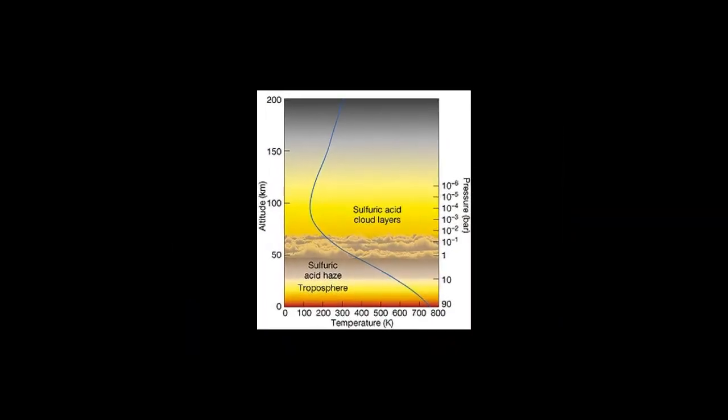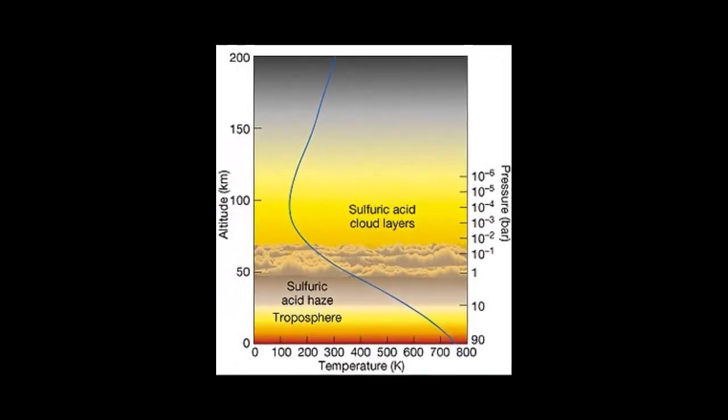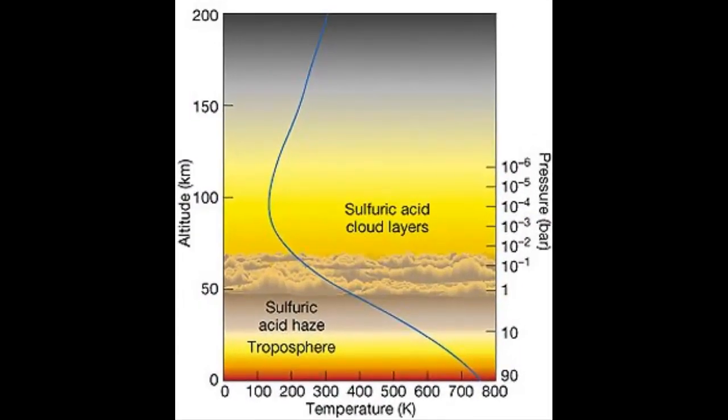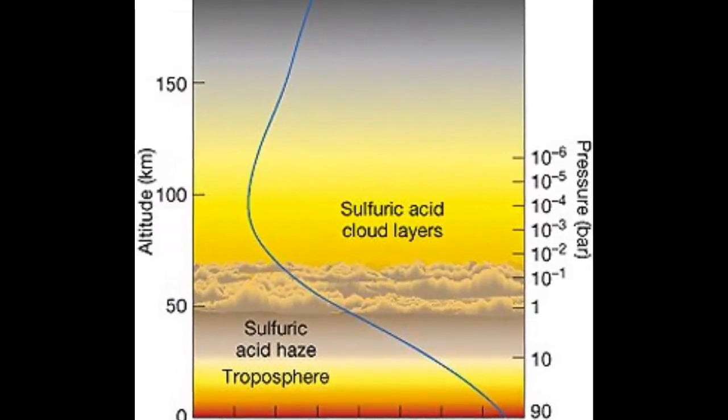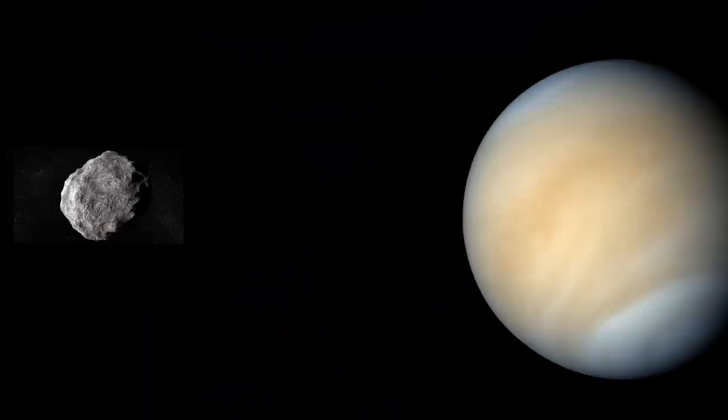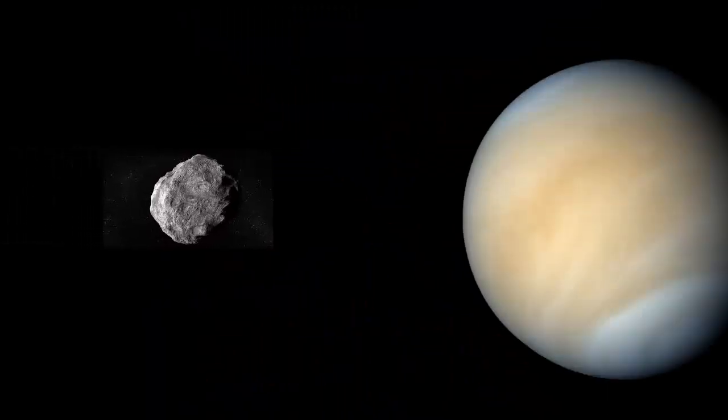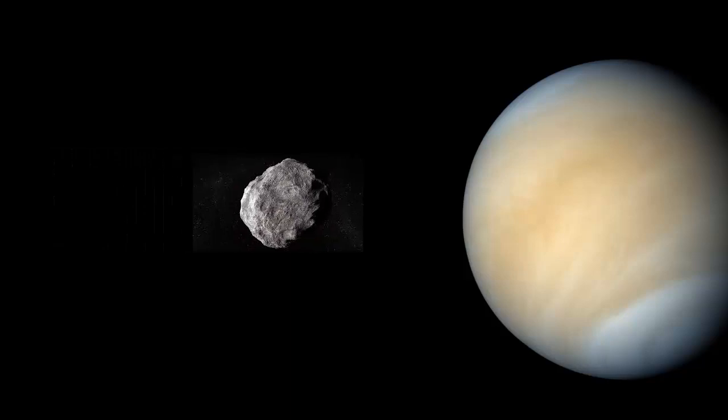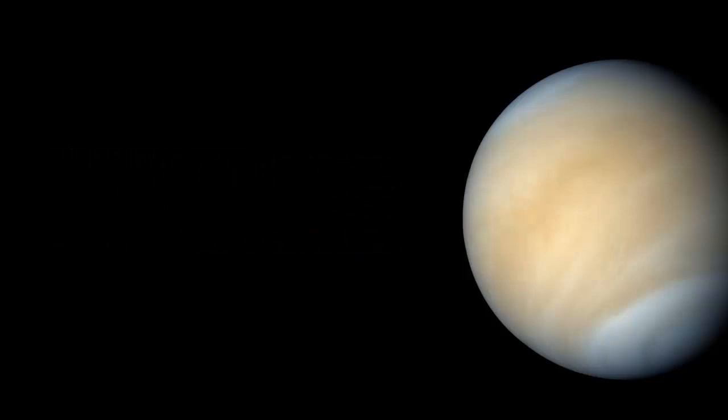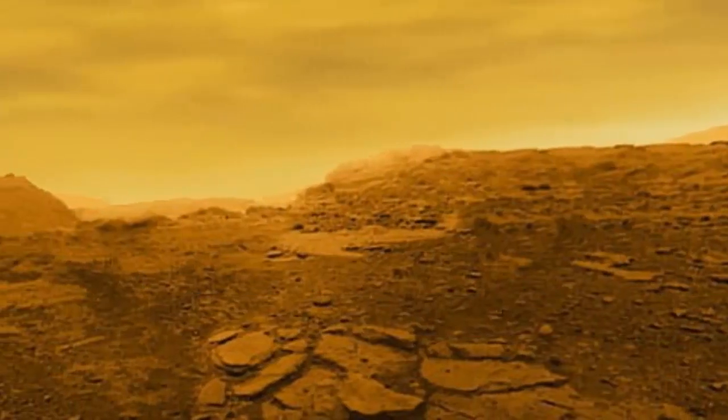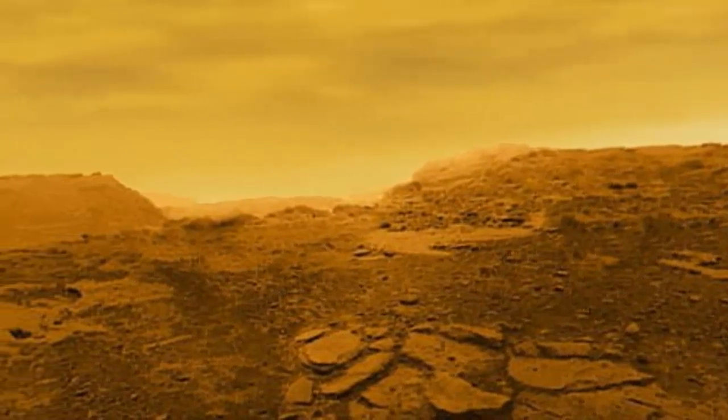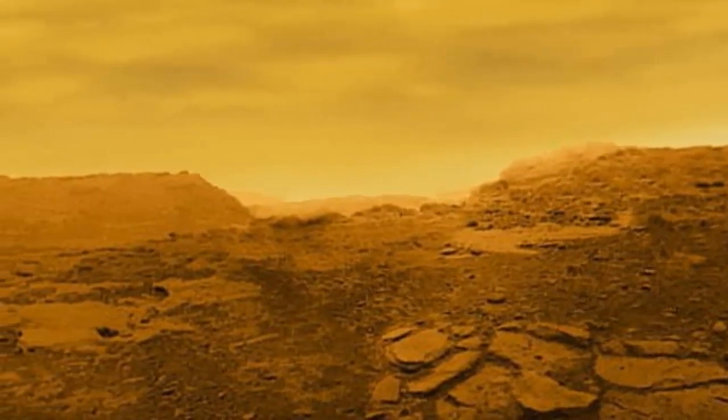The atmosphere of Venus is around 96.5% carbon dioxide. And because of this thick atmosphere, it will destroy any asteroid that comes even close to the planet. That's why on Venus's surface we don't see craters or any asteroid impacts. None of them made it.